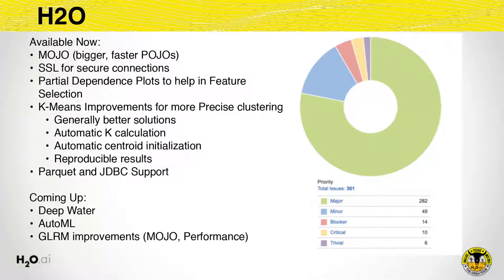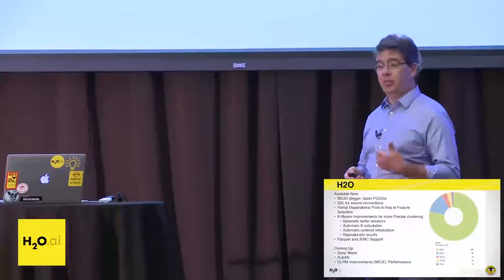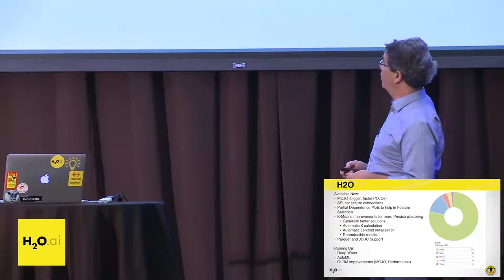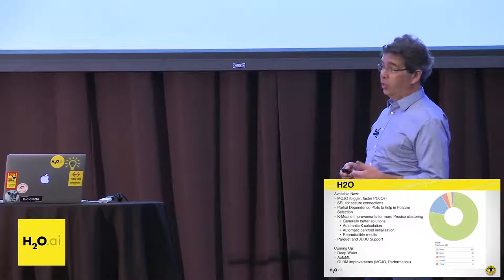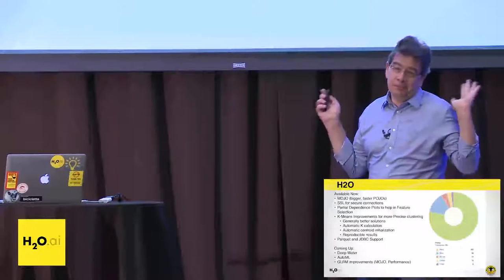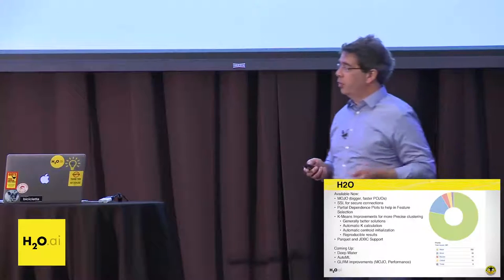It's two or three times faster than the POJO when your decision process is warmed up and the cache lines are going. If you're running it from a cold start, it's 20 to 30 times faster — so it starts really fast. But if you run it for a while, it only ends up three times faster.